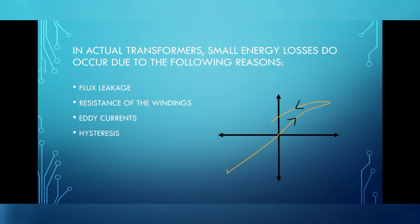Second one, the resistance of the windings. The wire used for windings has some resistance and so energy is lost due to heat produced in the wire. This can be minimized by using thick wires. Third one, eddy current. The alternating magnetic flux induces some eddy currents in the iron core and causes heating. Therefore, this can be reduced by using a laminated core.